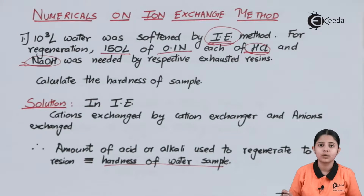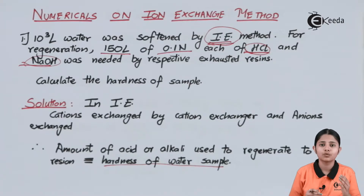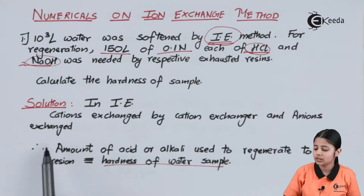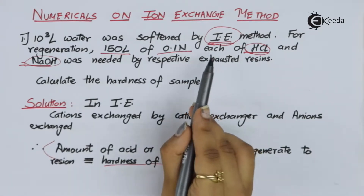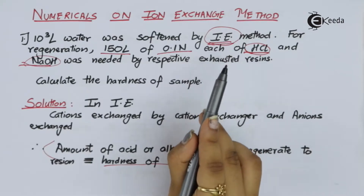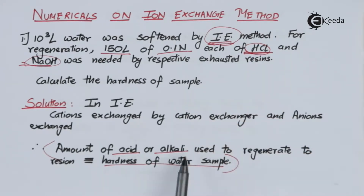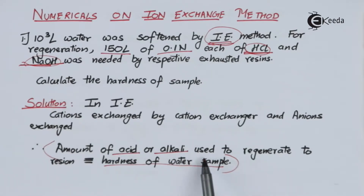If the water sample is extremely hard, we will need strong resins and a lot of regeneration for those resins. But if the hard water is not very hard, then the resins will not get exhausted very easily. The amount of HCl or NaOH used to regenerate the resin directly corresponds to the hardness of the water sample.